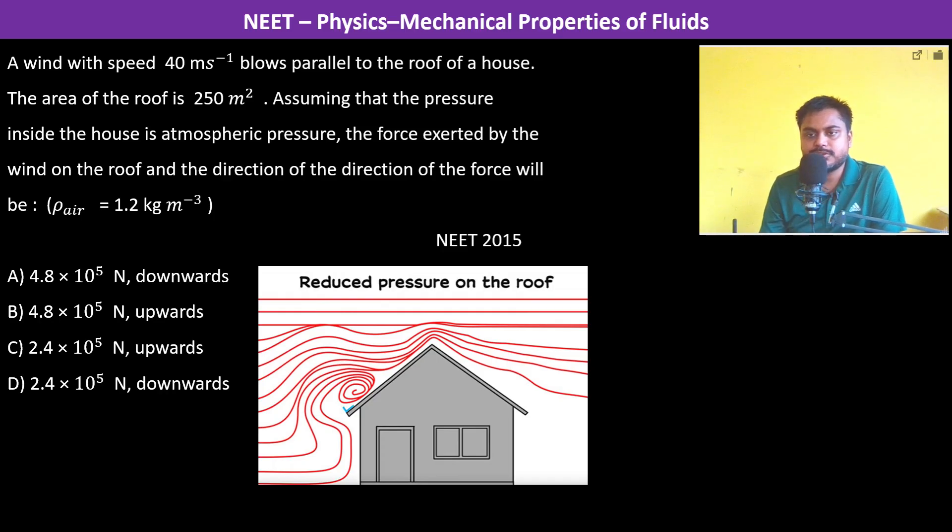So we have Bernoulli's equation: P plus rho g h plus half rho v squared is going to be constant. So this is for the upper side of the roof, and the same thing we have for the lower side of the roof.